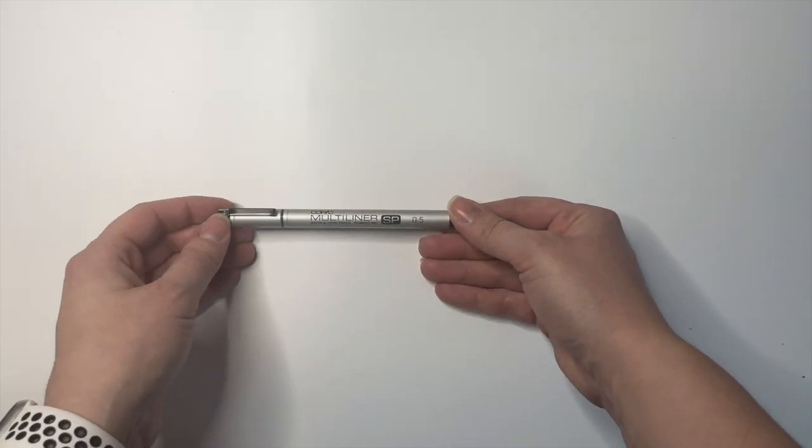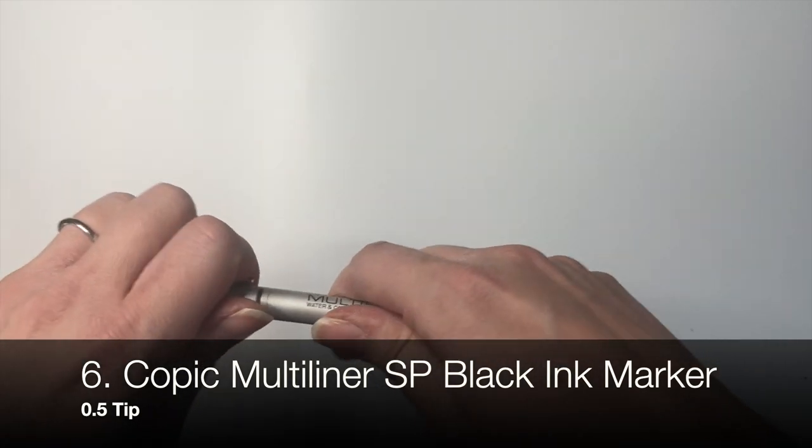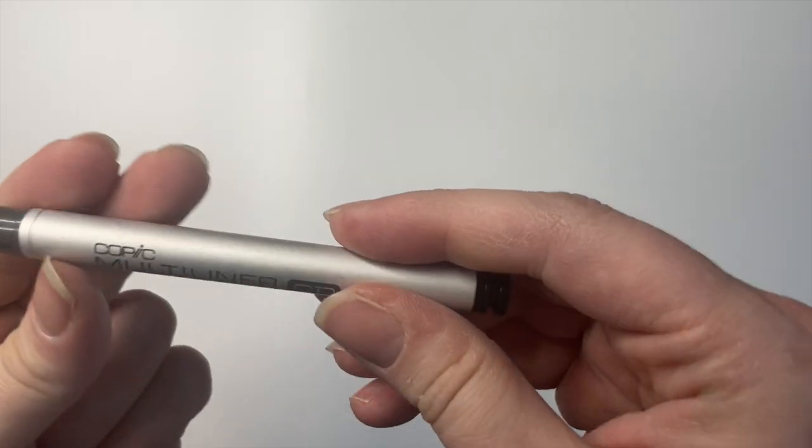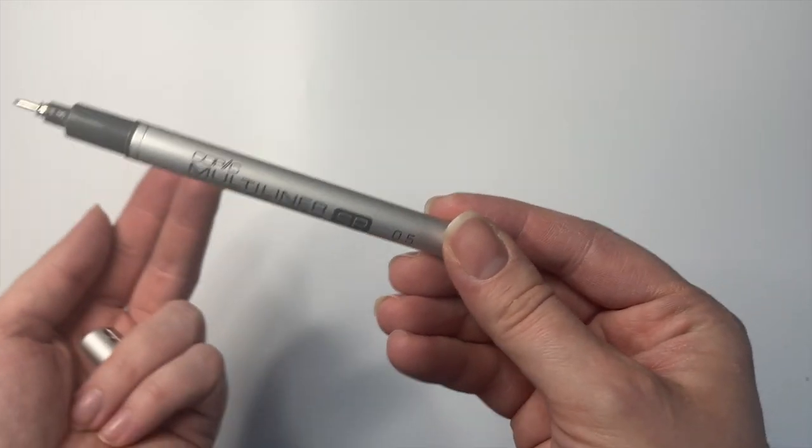Next, this is my favorite planner pen. And it's technically a fine liner. It's a felt tip pen. And I do not know how to pronounce this brand. It's either Copic or Copic.